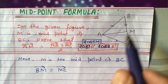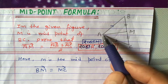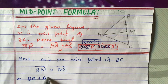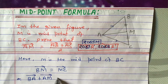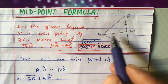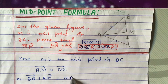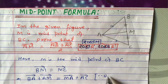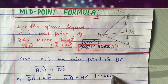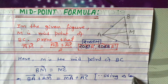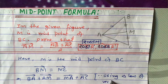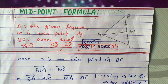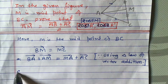Now vector BM can be written as vector BA plus vector AM, using the triangle law of vector addition. And vector MC can be written as vector MA plus vector AC, also using the triangle law of vector addition.